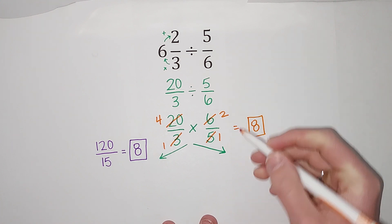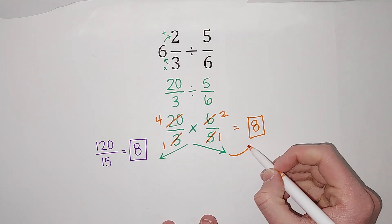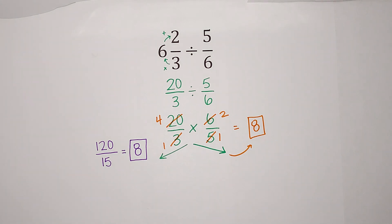All right, that did not go where my arrow was pointing. There we go. All right, so 6 and 2/3 divided by 5/6 gives me 8. Hopefully that made sense. Thanks, bye!